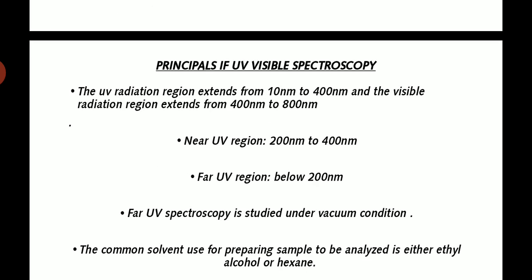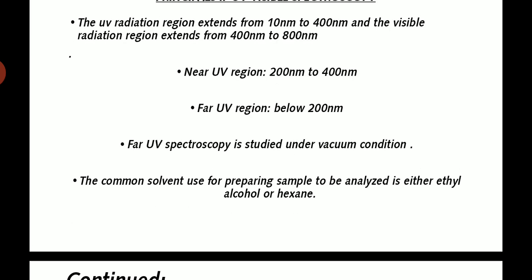Let's talk about principles of UV visible spectroscopy. The UV radiation region extends from 10 nm to 400 nm and the visible radiation region extends from 400 nm to 800 nm. Near UV region is 200 to 400 nm and far UV region is below 200 nm. Far UV spectroscopy is studied under vacuum conditions.